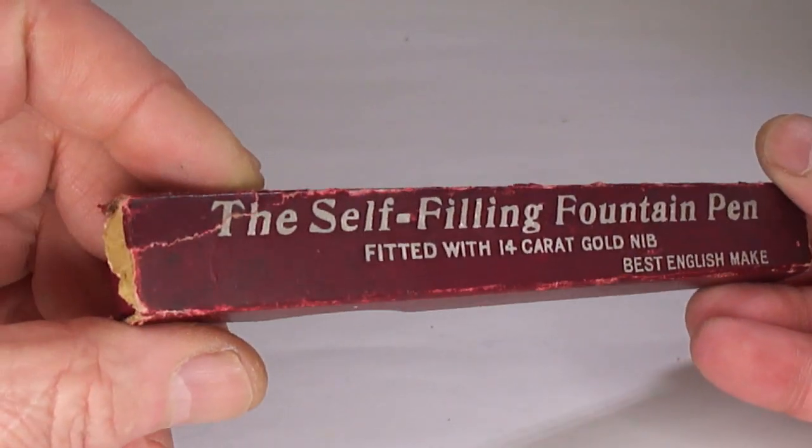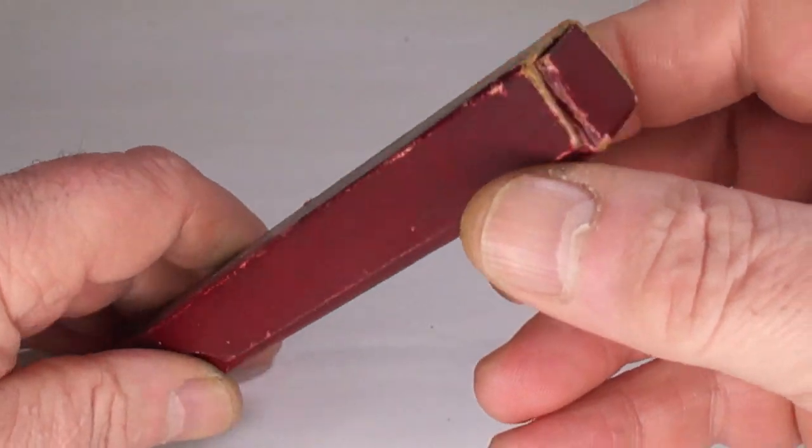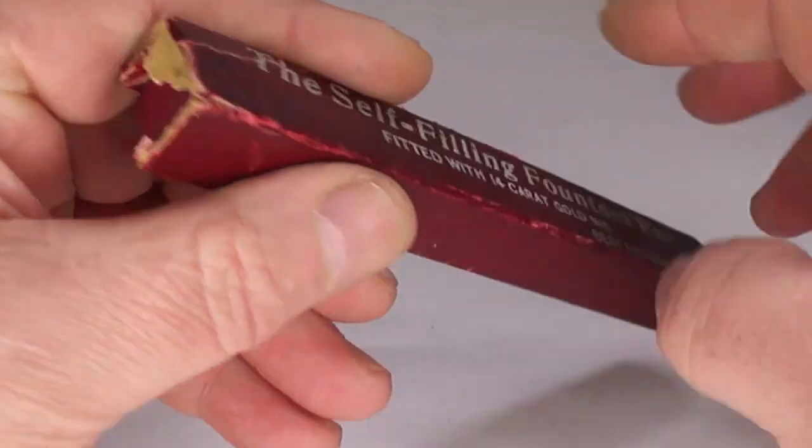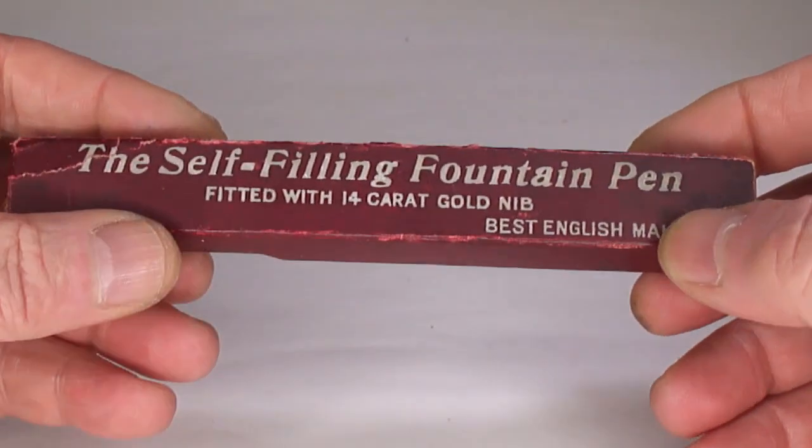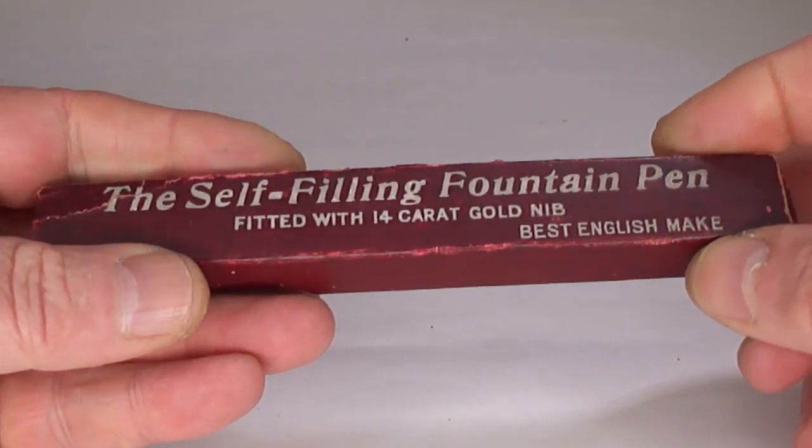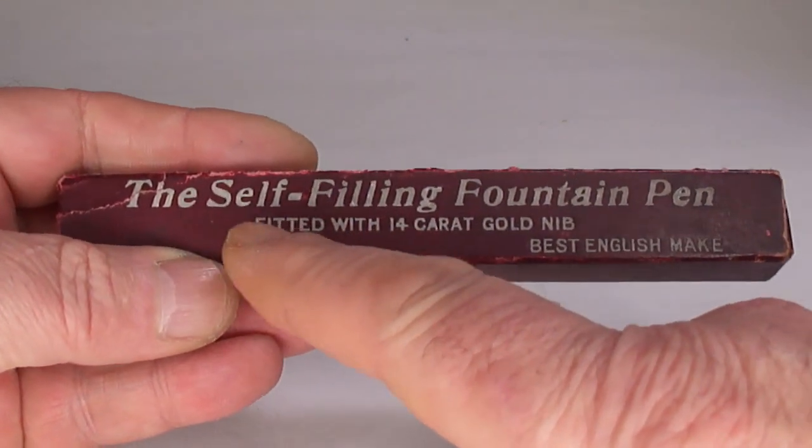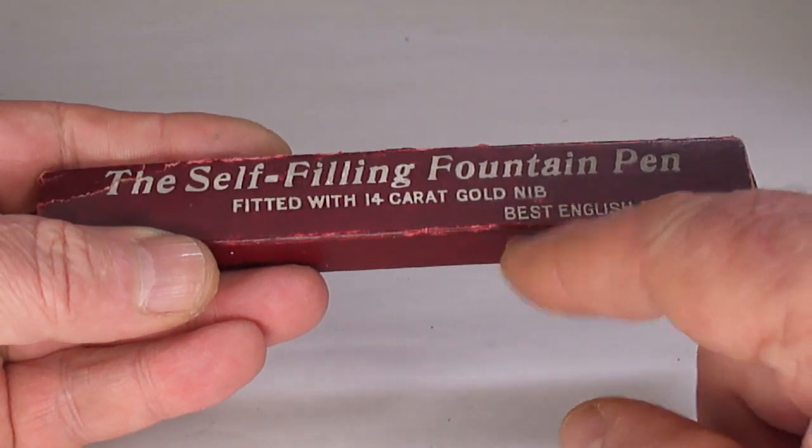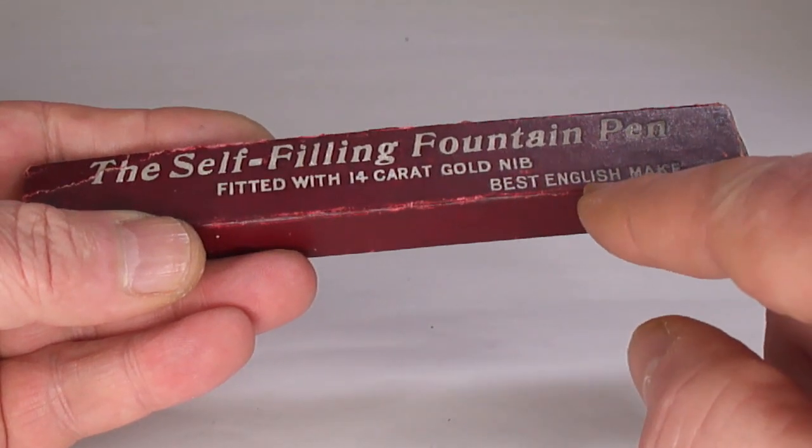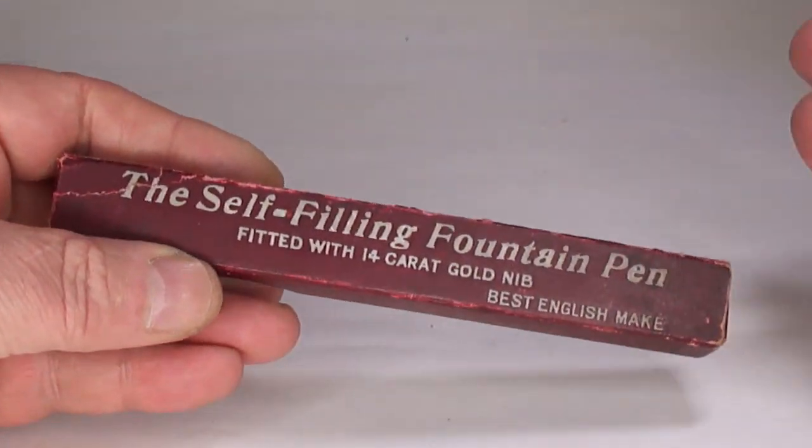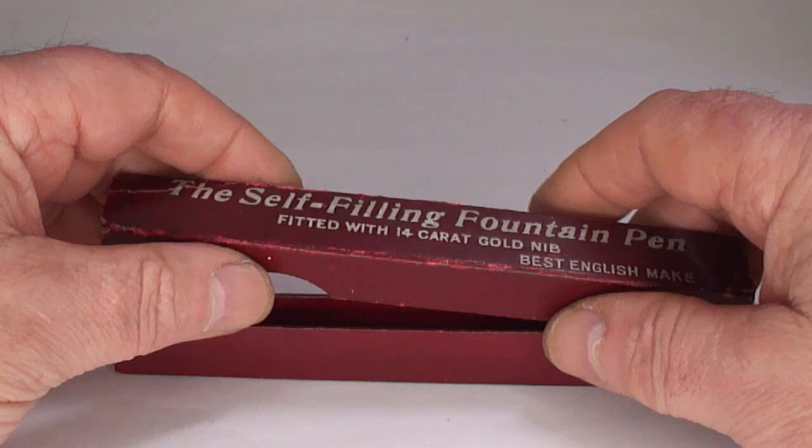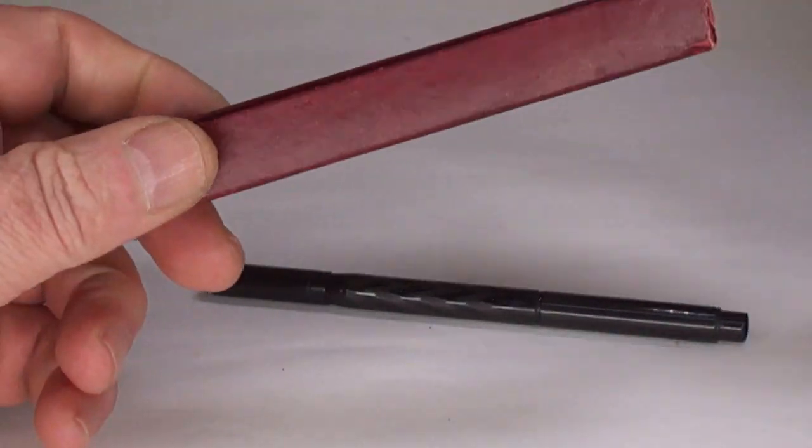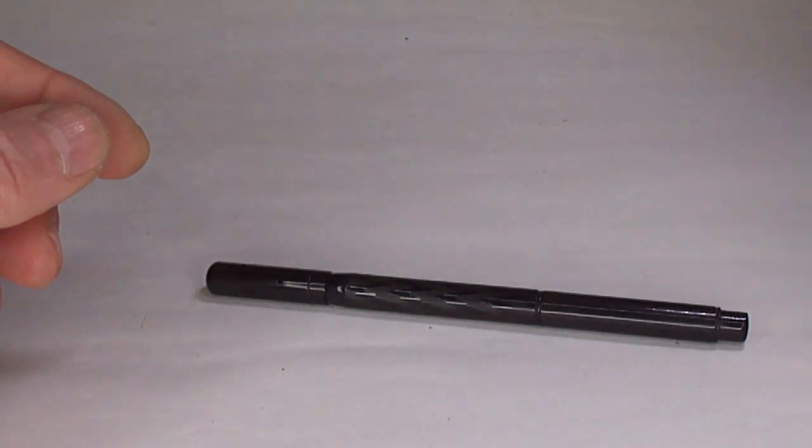You can see it comes in what I believe to be the original box. The sides are actually ripped, so whether it contains information we could have used, I don't know. The only thing it says on the box is 'the self-filling fountain pen fitted with a 14 karat gold nib, best English make,' but there's no manufacturer's name on the box.